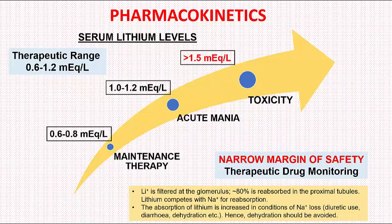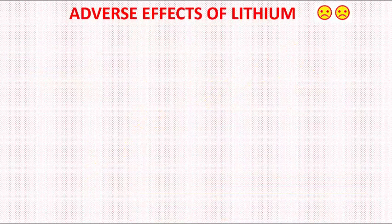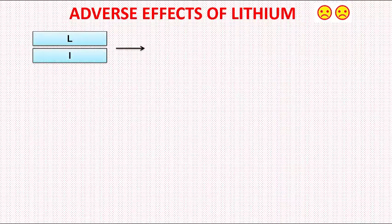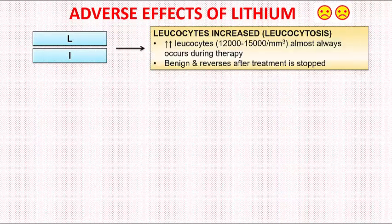Let us now discuss the various adverse effects. The mnemonic by which we can remember the adverse effects is the word LITHIUM itself. The letters L and I refer to leukocytes increased. Increased leukocytes, somewhere around 12,000 to 15,000, almost always occurs during therapy. This is benign and reverses to normal after the therapy is stopped.